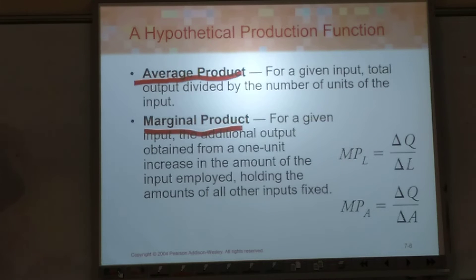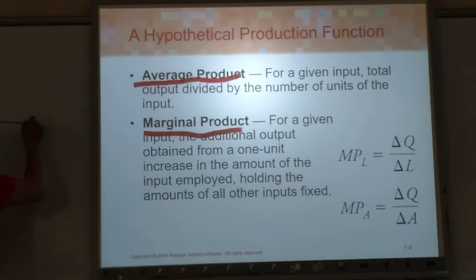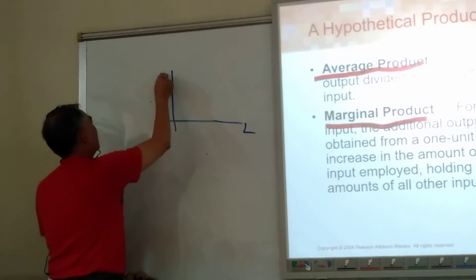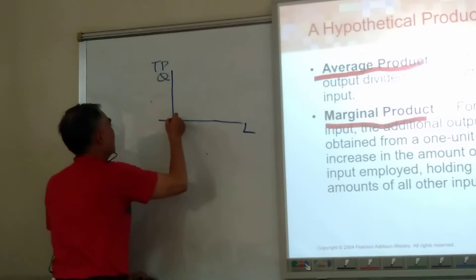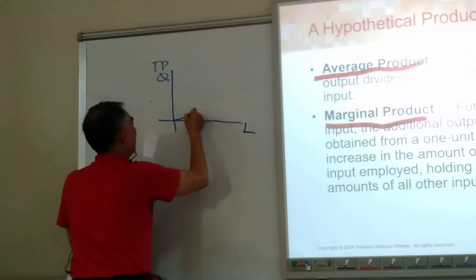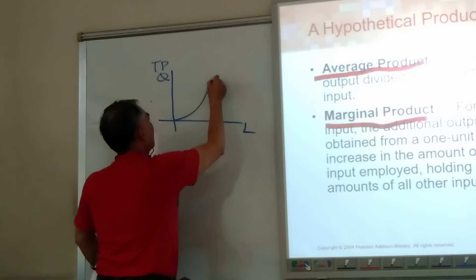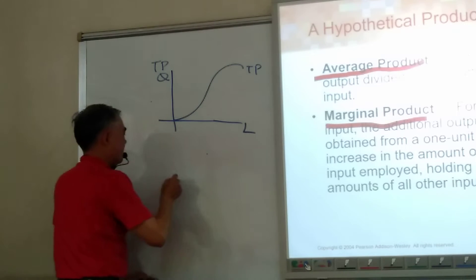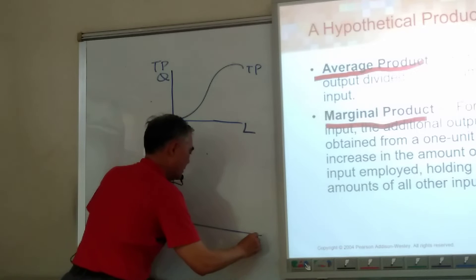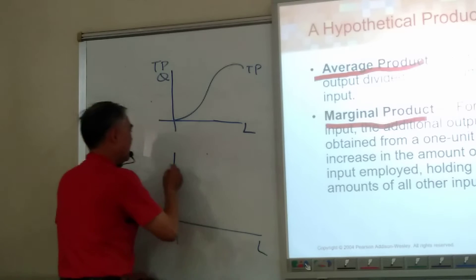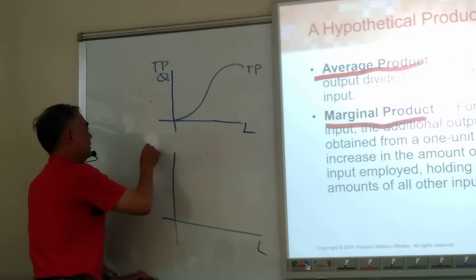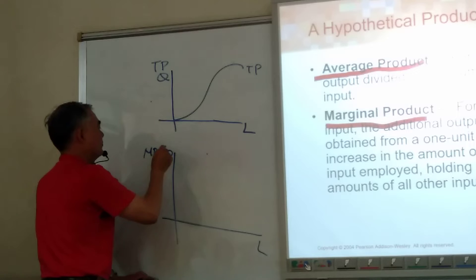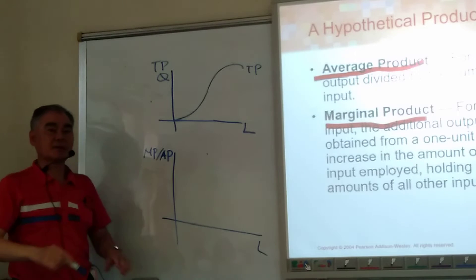Here is the amount of input — we say labor, quantity — and total product. And here we have MP and AP: marginal product and average product.